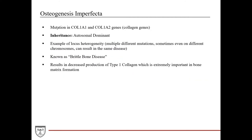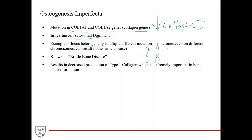Osteogenesis imperfecta is due to a mutation in the COL1A1 or COL1A2 genes, which are responsible for collagen synthesis, specifically type 1 collagen. This is an autosomal dominant inheritance. This disease is an example of locus heterogeneity, meaning multiple different mutations — sometimes even on different chromosomes — can still result in the same phenotype.